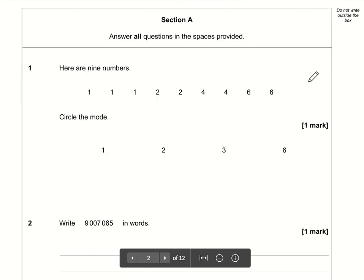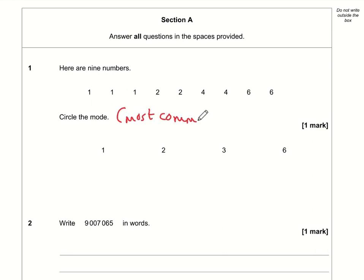Let's take a look at question number one. Here are nine numbers. Circle the mode. Well the mode is the one that is the most common. If you remember it's the most common or most frequently occurring then this question is easy. One appears three times, two only appears twice, four twice, six twice. So the mode is one because it is the most frequently occurring value.